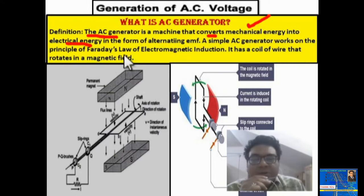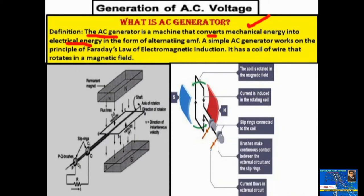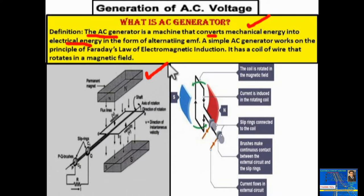A simple AC generator works on the principle of Faraday's law of electromagnetic induction. It has a coil of wire that rotates in between a uniform magnetic field. You can see the construction diagram of the AC generator shown here, where there are two magnets — this is the north magnet and this is the south magnet.